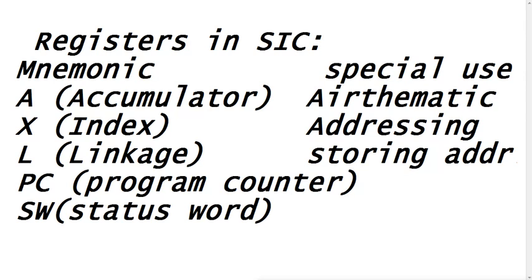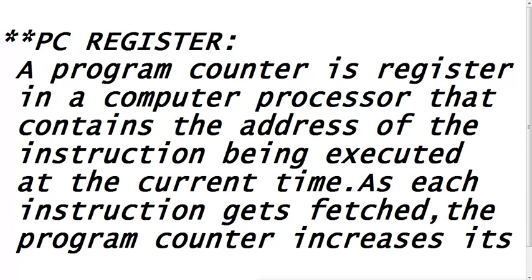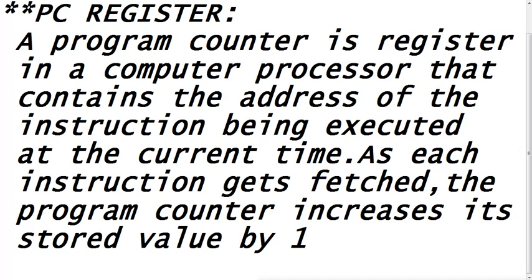Now we will see the use of the program counter register, that is the PC register of SIC, and SW — the status word register of SIC. The program counter register is a register in a computer processor that contains the address of the instruction being executed at the current time. As each instruction gets fetched, the program counter increases its value. The basic function of the PC is counting.